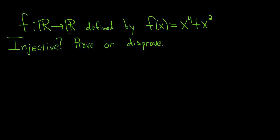So we have a function defined from the real numbers into the real numbers, and it's given by f of x equals x to the fourth power plus x squared. The question is, is the function injective? And we have to prove or disprove.